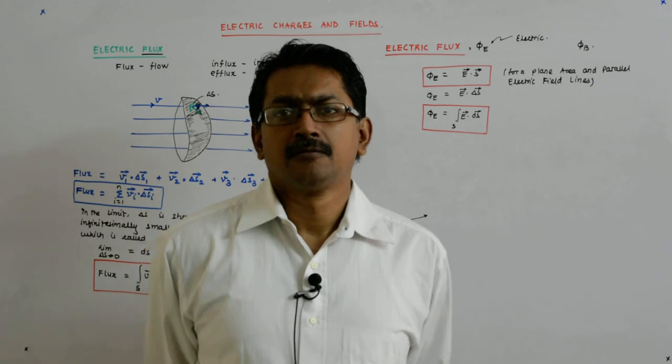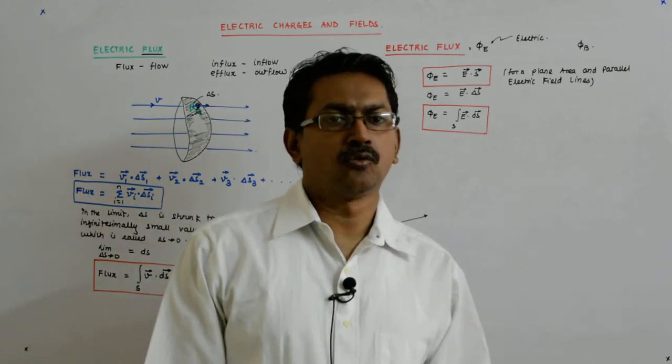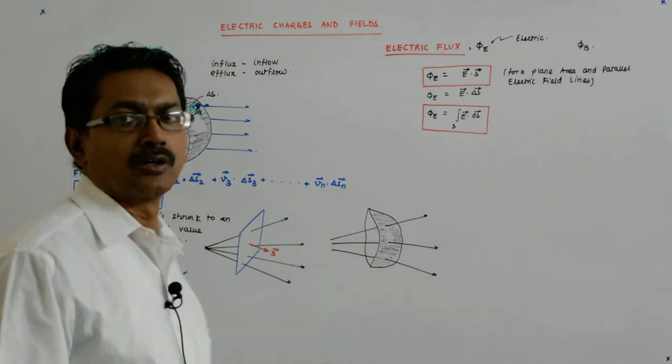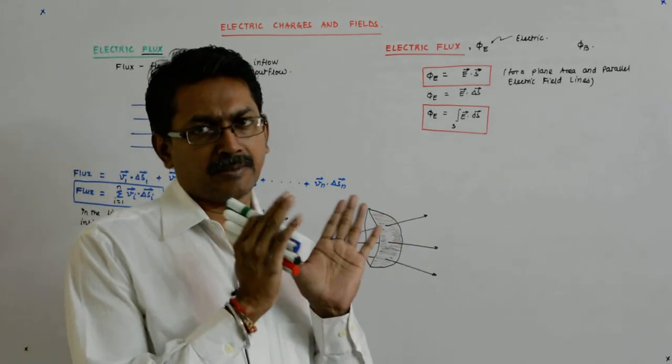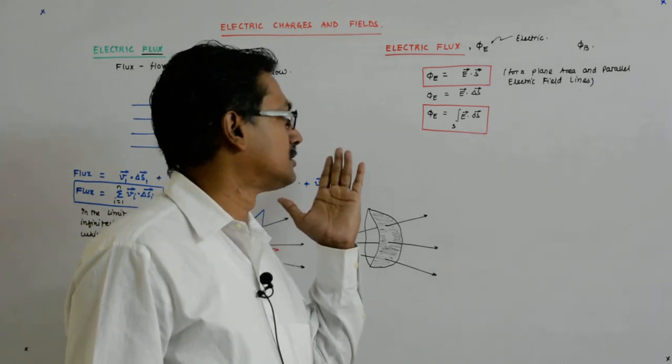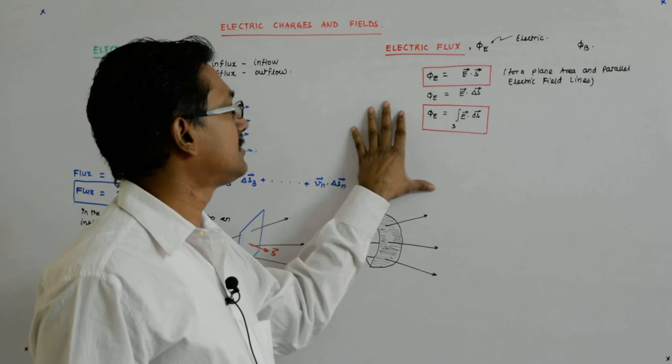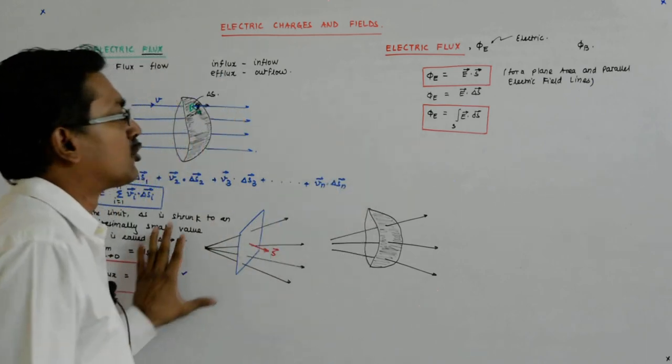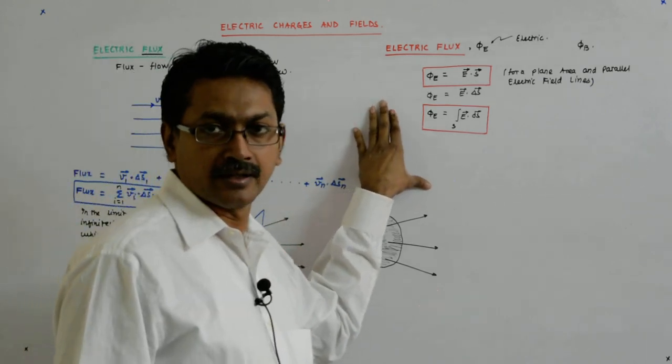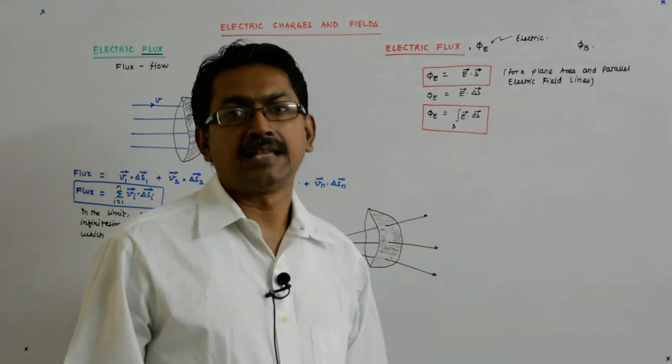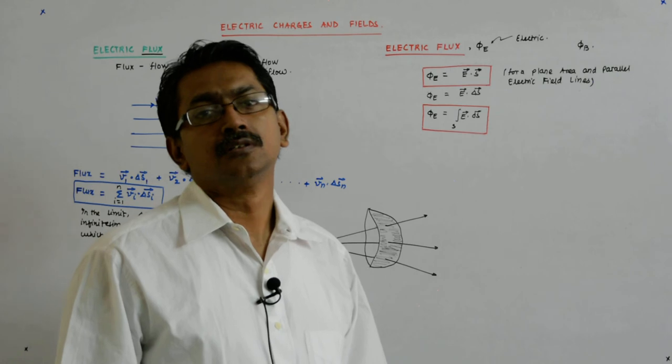Just because we now very well understand what it means when it is an area and water flowing. So if we keep in mind the volume of water that flows, then we understand that this is just the counterpart of it. Why it has been defined, what is the use of it, that will be known to you when you go to Gauss's law.